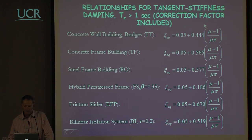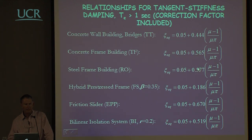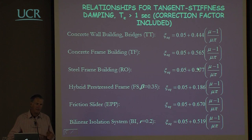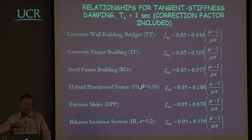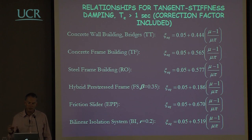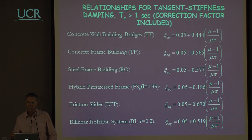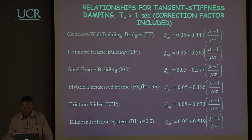The equivalent viscous damping for bridges and wall buildings is essentially the same. In reinforced concrete and steel frame buildings it's almost identical. You might be surprised that a steel building, which dissipates so much more energy than a concrete building, doesn't produce a greater equivalent viscous damping. The reason is that the shape of the hysteresis curve for steel frame buildings tends to be similar to an elastoplastic characteristic, which is very sensitive to P-delta effects — there's a tendency for displacement to crawl off in one direction under earthquake response, reducing the damping effectiveness.